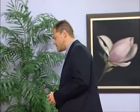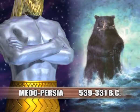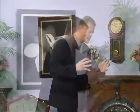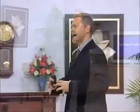The next beast, corresponding to the silver chest in the statue, represented Medo-Persia, which reigned approximately 539 BC to 331 BC. Daniel 7 verse 5 describes a bear with one side slightly raised up and three ribs in its teeth — a very strong and powerful kingdom, slightly raised on one side just as the arms were raised on the chest of silver.